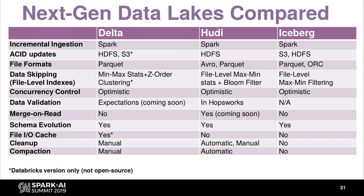Another difference is that Hoodie and Iceberg are Apache products and have been for quite a while, whereas Delta is still a commercial product by Databricks. Delta has two versions: there is an open source version, which is a subset of the commercial one. Some of the things I'll be talking about today, like optimizations of Delta, are only available in the commercial version and not in the Delta Lake open source one. That's also the reason why we, in our platform, support both Delta and Hoodie right now — to be sure what happens with the open source versions.